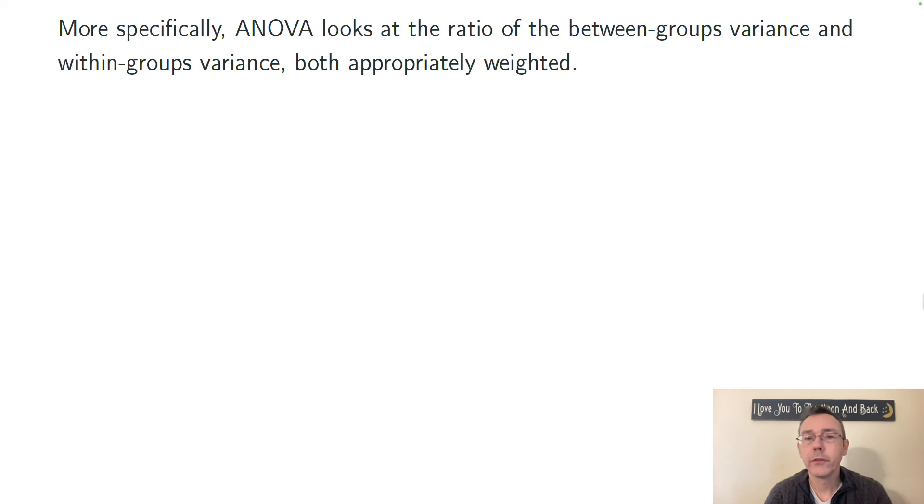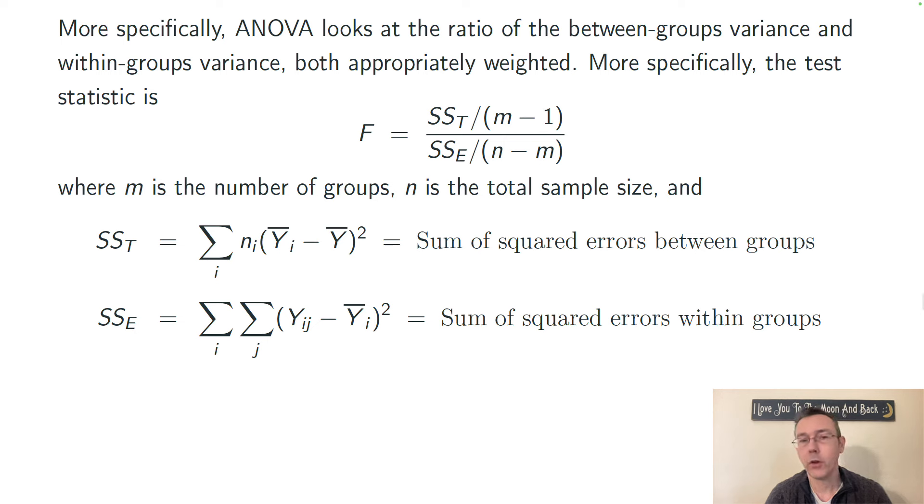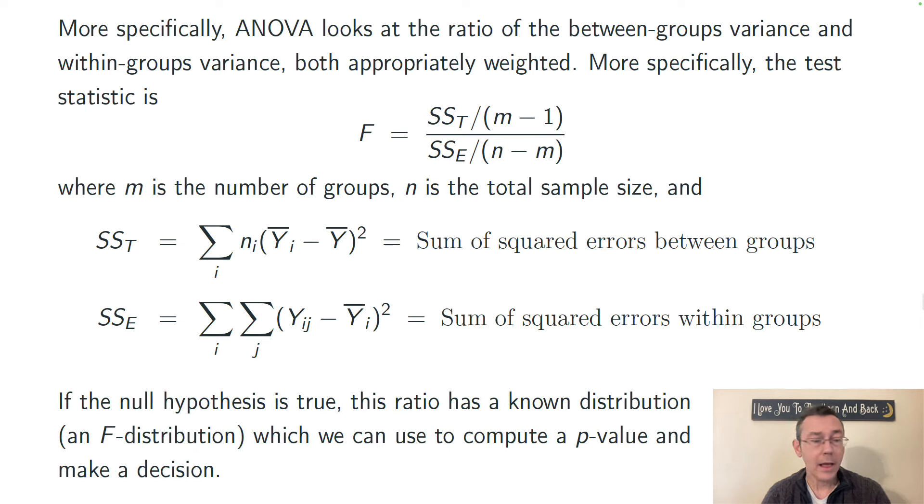More specifically, ANOVA looks at the ratio of the between-groups variance and the within-groups variance, both appropriately defined and weighted. I'm going to flash the math here but not really talk about it. I have a longer video that goes into the math in more detail. If the null hypothesis is true, and the quantitative variable is the same on average between the different groups in the larger population, then this ratio that we're calculating has an F-distribution, and we can use that to compute a p-value and make a decision.